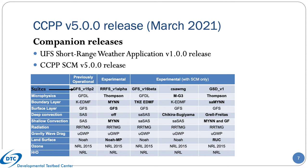The last release of the CCPP, version 5, took place in March 2021, accompanying the UFS short-range weather version 1 release and the single column model version 5 release. The parameterizations for 5 suites are supported in this release. One suite is the GFS V15P2, which was used in the previously operational GFS version 15. The other 4 suites are experimental, including the RFS V1 Alpha suite and 3 suites supported for use with the single column model. The listings in bold font denote changes from the GFS V15P2 suite.